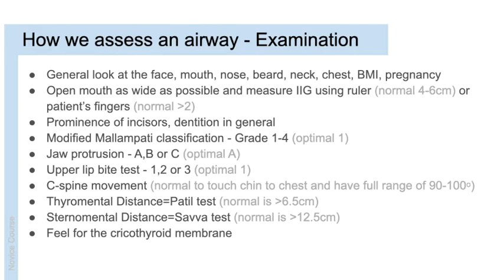Ask the patient to open their mouth as wide as possible to measure the inter-incisor gap. It is normal to have a gap of four to six centimetres; commonly we use two fingers as a surrogate. Three centimetres is the size of the flange on a standard Macintosh laryngoscope, and an LMA can clear an inter-incisor gap of two centimetres. While the mouth is open, look at the prominence of the incisors — buck teeth — and examine the dentition in general, noting any wobbly teeth.